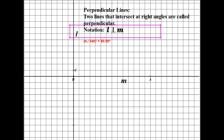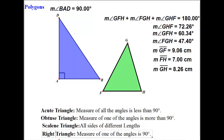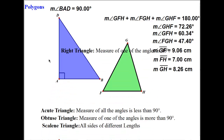Now we're going to discuss some polygons. Polygons are closed figures. Let's start with triangles — 'tri' means three, so a three-sided closed figure is called a triangle. Any triangle that has one 90-degree angle, like this blue triangle here, is called a right triangle. We use a small square symbol to indicate the angle that is 90 degrees.